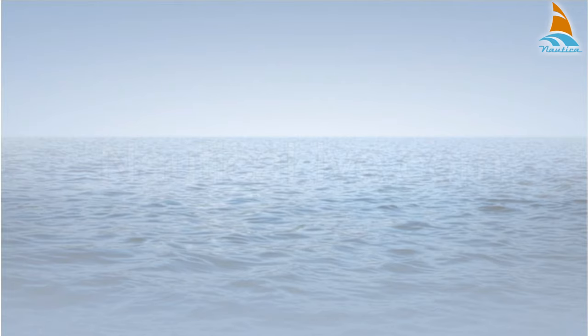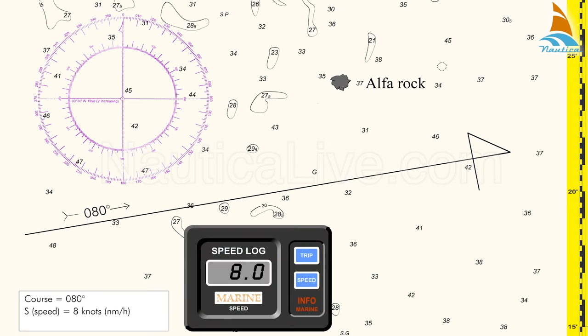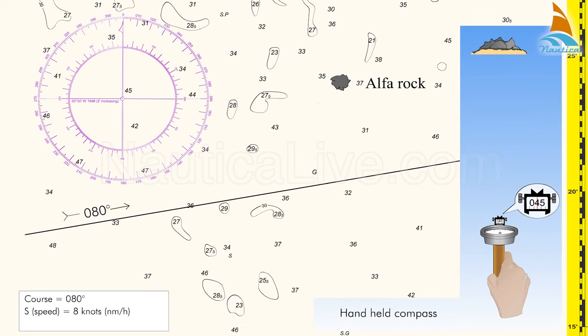This is how we plot a running fixed position. Assuming the course is 080 degrees and the speed is 8 knots or 8 nautical miles per hour, we take a bearing of 045 degrees on alpha rock at 0900.